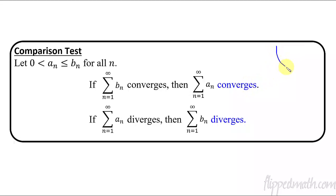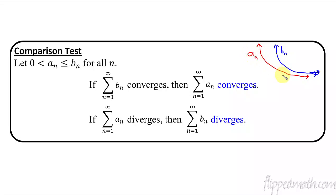If you have some type of function that's going like this, and you can see here it's going to start flattening out, kind of like an exponential decay graph. This is going to converge, so we'll call this one b_n. This is the larger one. So then underneath it, if I have a_n and it's starting to get squeezed underneath this — well, if a_n is smaller than b_n, it's underneath the b_n, and we know b_n is converging, then a_n also has to converge. If the larger one is converging, the one underneath it must also converge.